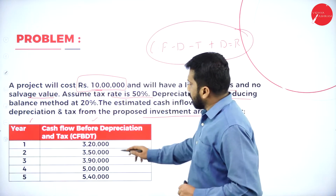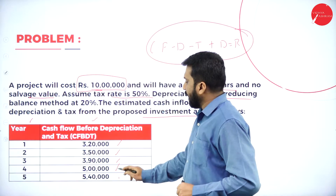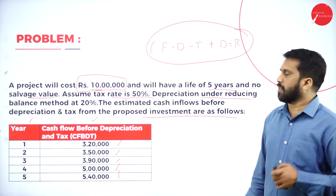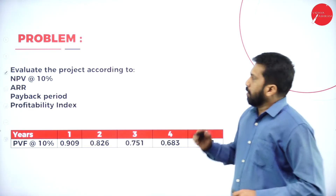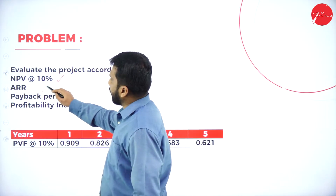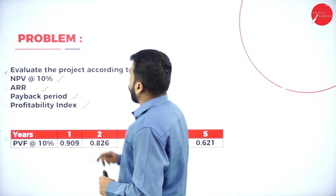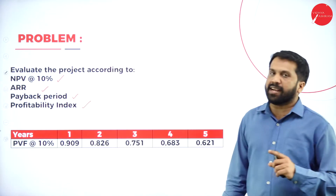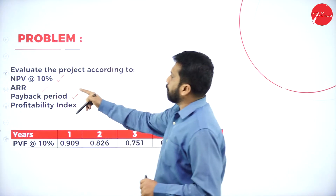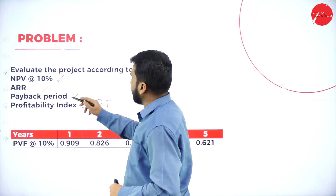The cash inflows given are: 3 lakh 20 thousand, 3 lakh 50 thousand, 3 lakh 90 thousand, 5 lakh, and 5 lakh 40 thousand. Now evaluate the project according to NPV, ARR (accounting rate of return), payback period, and profitability index. ARR will come later in the next session, but today we'll go with NPV, payback period, and profitability index.